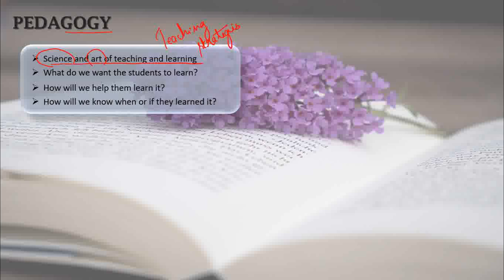This term is used to address: what do we want the students to learn? How will we help them to learn it? And how will we know when or if they have learned it? So these are all related to children only. The main focus here is on the child or the student — how we will teach students and help them in their learning.